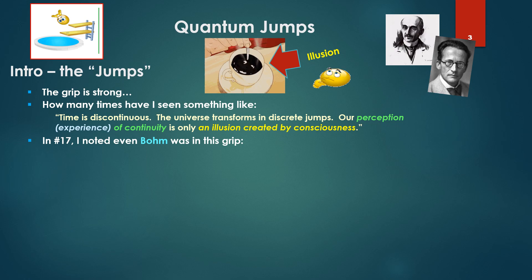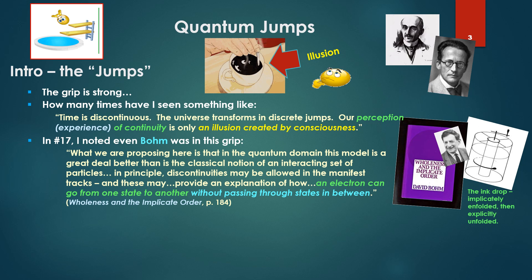In number 17, on Bohm, I noted even Bohm was in this grip. He proposed that in the quantum domain, this model is a great deal better than the classical notion of an interacting set of particles. His model, the concrete version thereof, was of a cylinder full of glycerin rotating an ink drop into it, implicately enfolding it, and then rotating back again and explicitly unfolding it. Notice the continuous rotation.